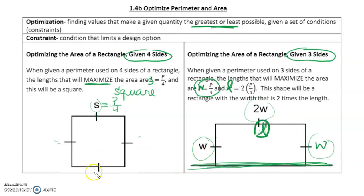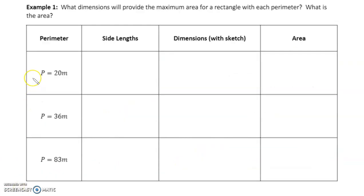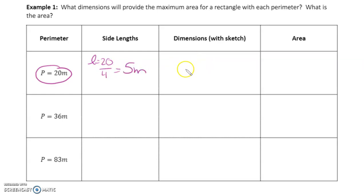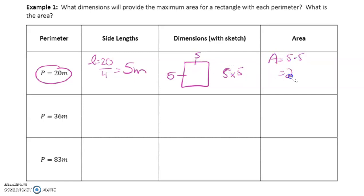Example one: what dimensions provide the maximum area for a rectangle with each given perimeter, and what is the area? For a perimeter of 20, the side length is 20 ÷ 4 = 5 meters, giving a 5 by 5 square. The area is 5 × 5 = 25 meters squared.